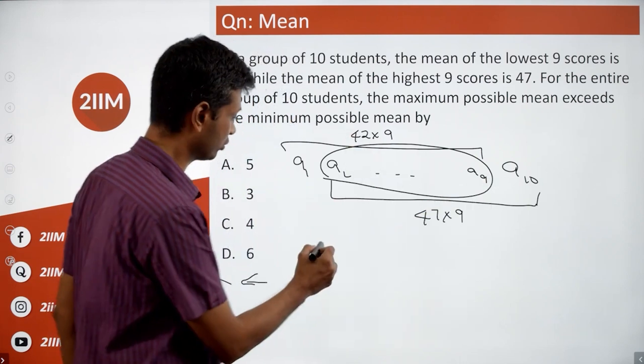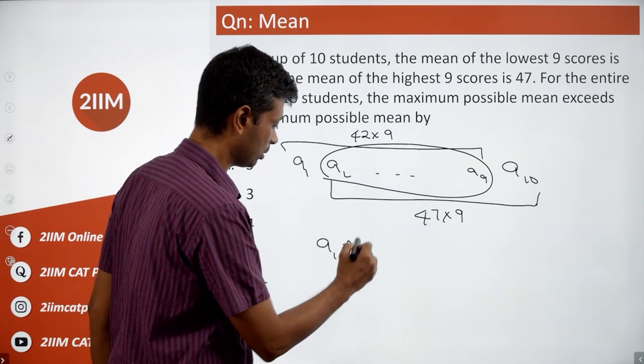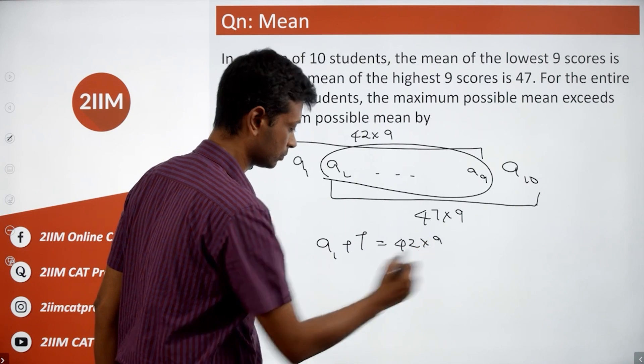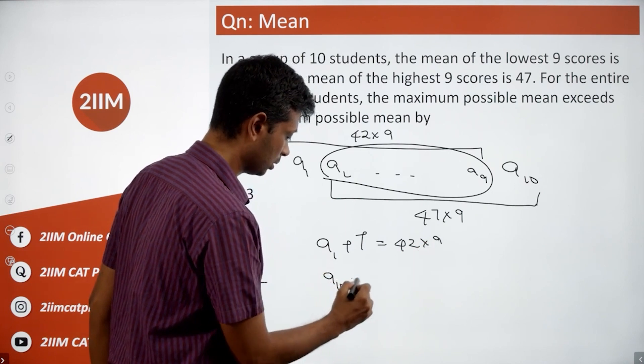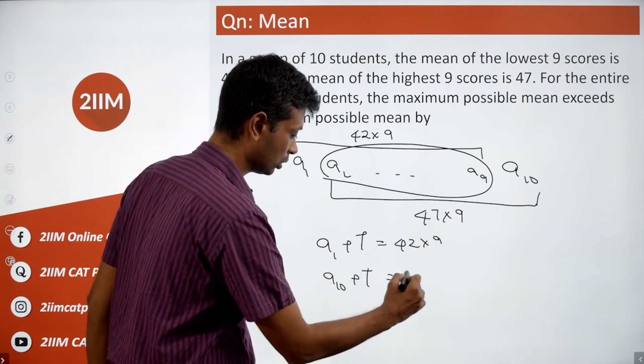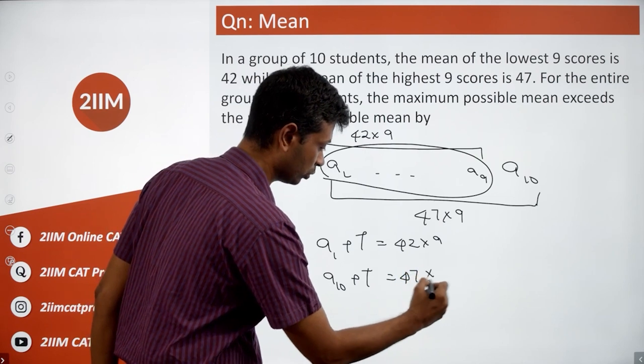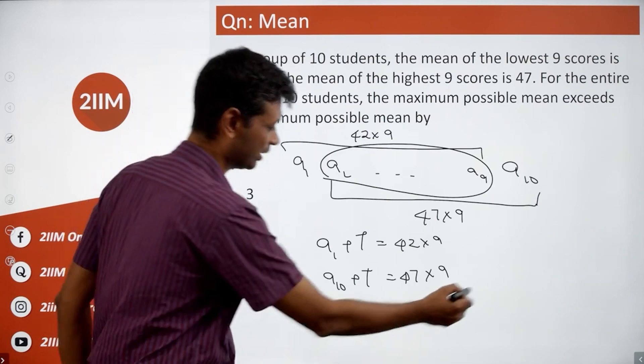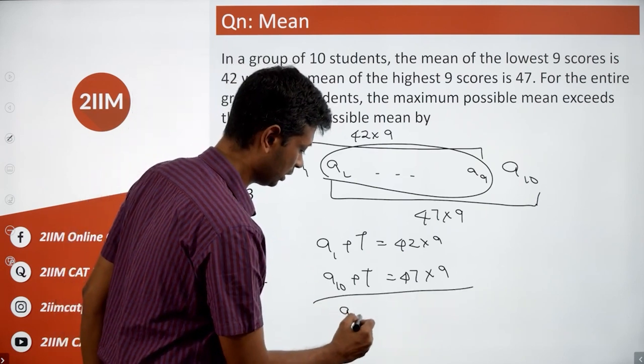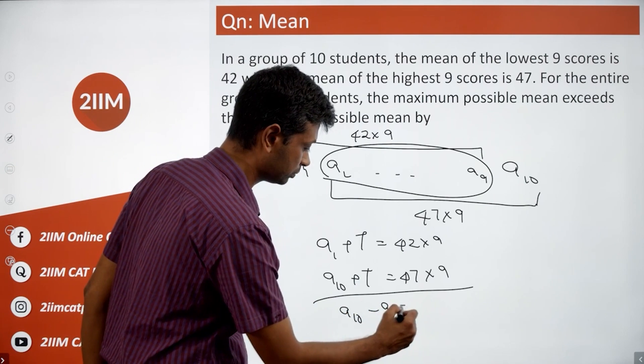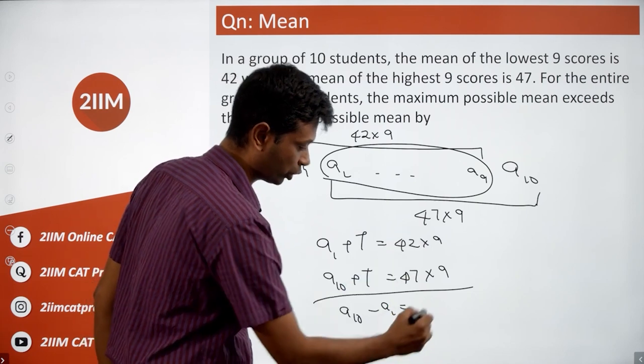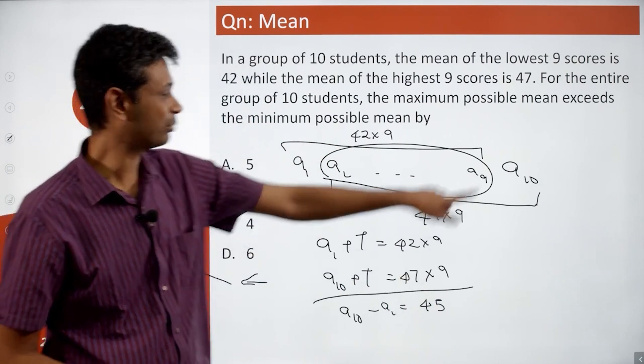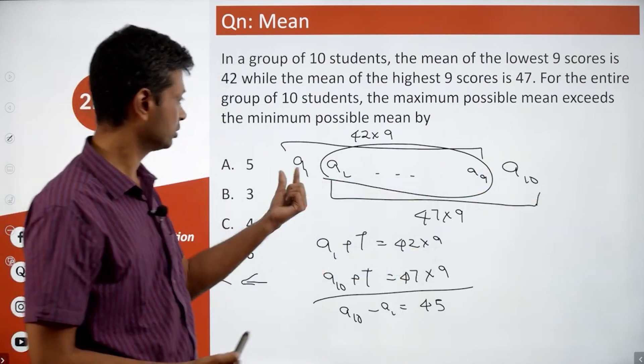I want to write this down differently: a1 plus this total is 42 times 9, a10 plus this total is 47 times 9. This total is everything from a2 to a9. Subtract one from the other: a10 minus a1 is 47 minus 42 times 9, which is 5 times 9, equals 45.